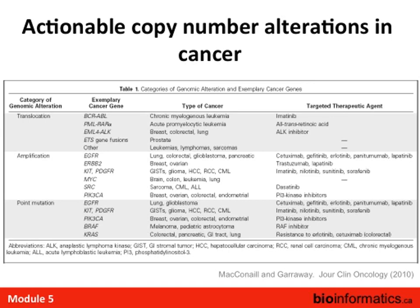Trastuzumab is the scientific name for Herceptin. Other drugs include erlotinib targeting EGFR and PI3 kinase inhibitors targeting PIK3CA. These are clinically important and clinically actionable events in cancer. This is why we're all working hard to discover these changes — so inhibitors and therapies can be designed around them. The list is quite small when you look at the landscape of breast cancer, where a huge part of the genome is affected. We've got a list you can almost count on one hand of genes we can actually target.